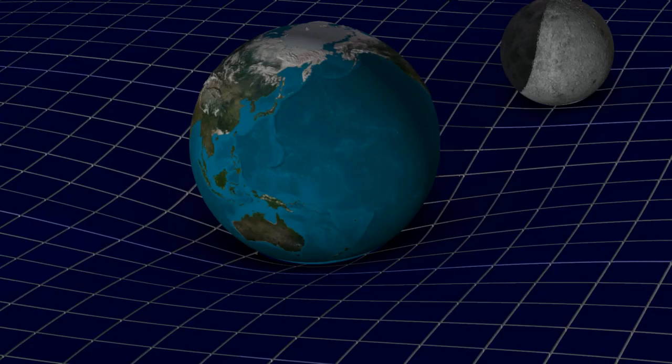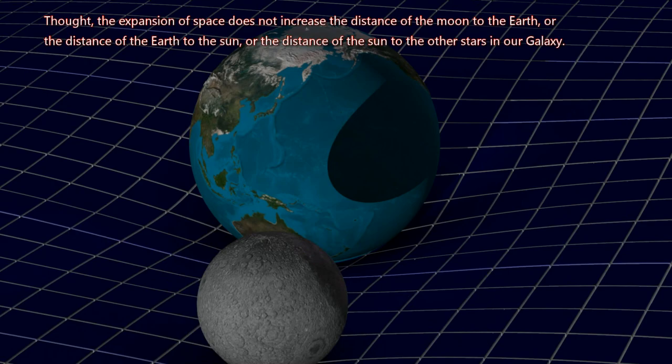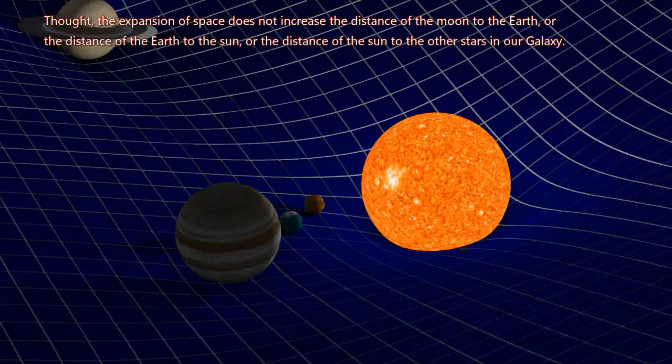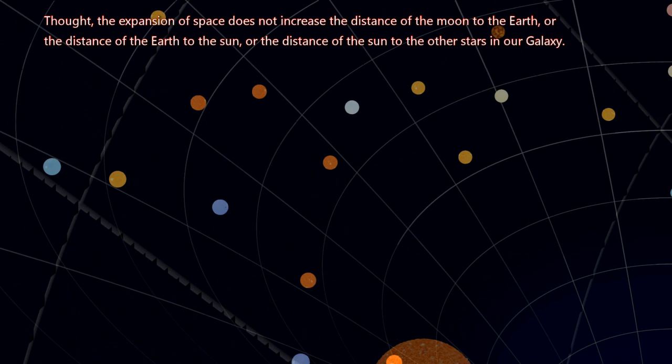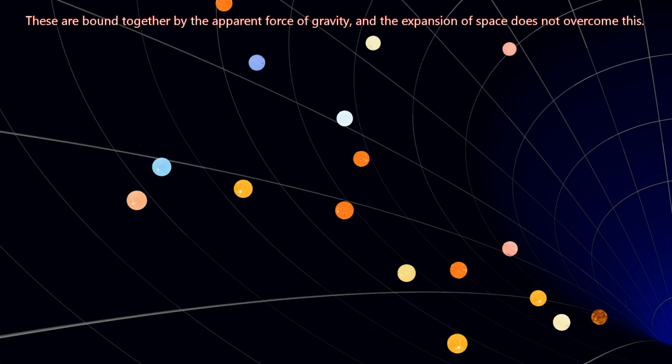Though, the expansion of space does not increase the distance of the Moon to the Earth, or the distance of the Earth to the Sun, or the distance of the Sun to the other stars in our galaxy. These are bound together by the apparent force of gravity, and the expansion of space does not overcome this.